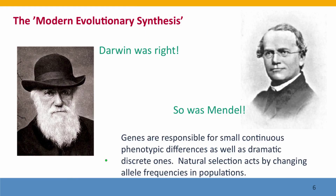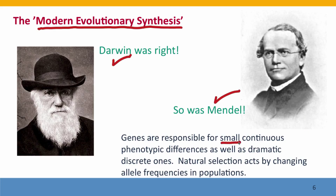The resolution to this came in an accord termed the modern evolutionary synthesis. This led to the conclusion that Darwin was right and Mendel was right. Genes are indeed responsible for inheritance, and they're responsible for small continuous phenotypic differences as well as the discrete ones. Natural selection acts, as Darwin had said, by changing the frequencies of alleles in a population — the genetic factors that cause these small differences in phenotype.